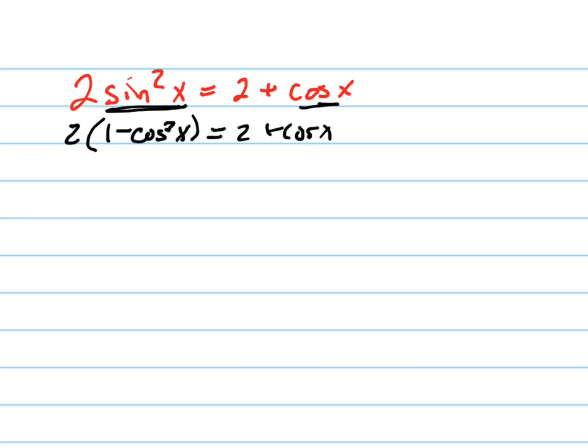I did that because now when I distribute this in, notice I'm distributing the 2 in. Now I can set this equal to 0, not plus or minus, just plus. Now I can set this whole thing equal to 0.